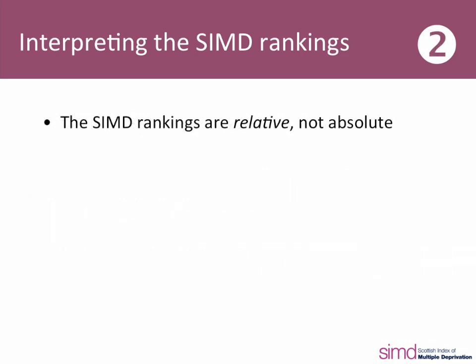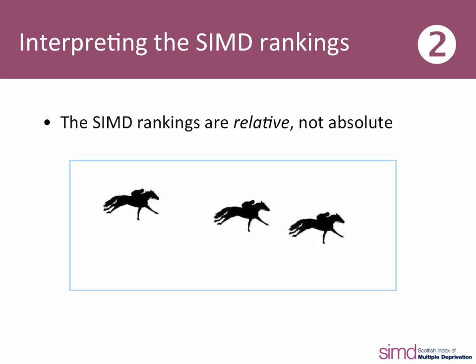Secondly, as the SIMD provides relative ranks, we can't say too much about how much more deprived one area is than another. Think about it in the same way as a race — you can't tell just by a list of people how much better the winner performed compared to second place. So a data zone ranked 50 is not twice as deprived as a data zone ranked 100.